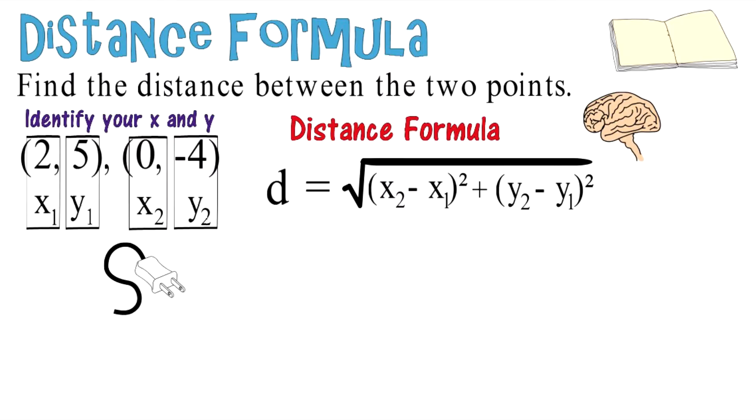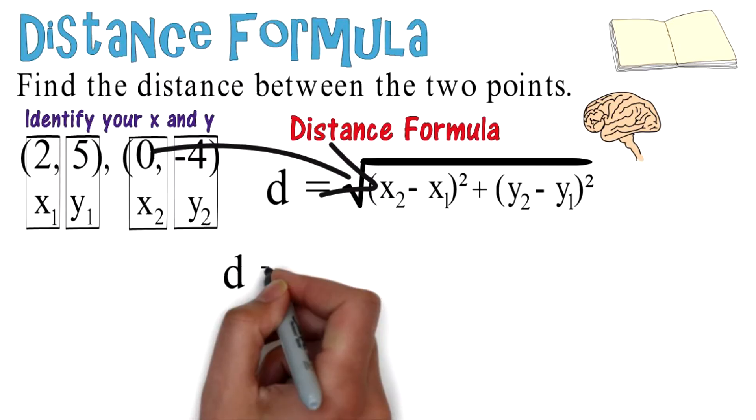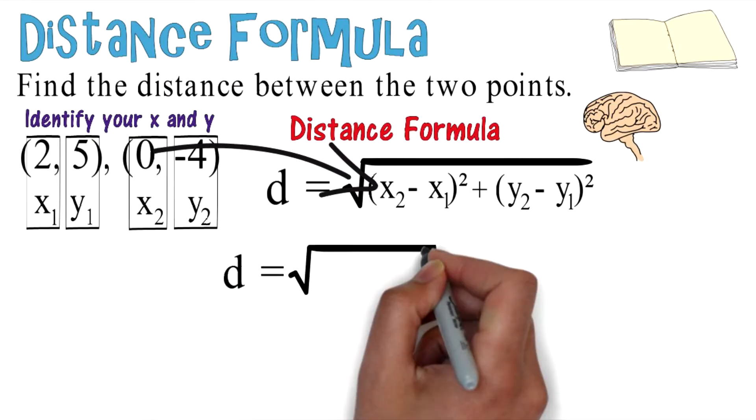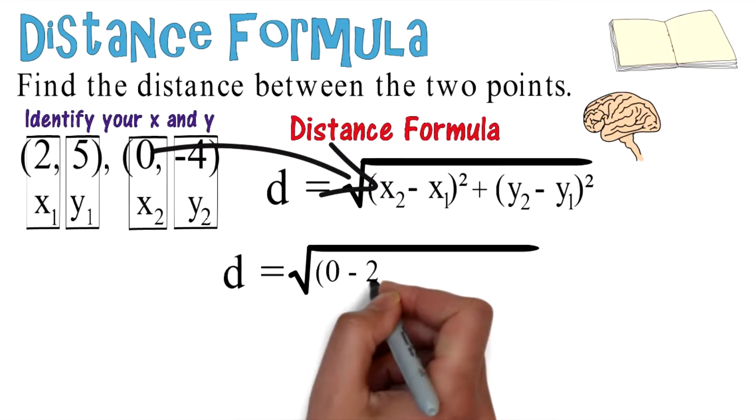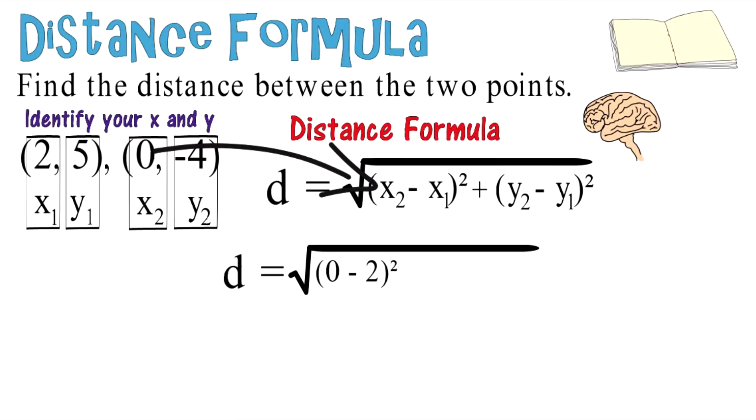Our next step is to simply plug it into the formula. We're going to take our numbers and plug them in. So d equals the square root of (0 - 2)² plus (-4 - 5)².